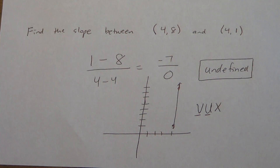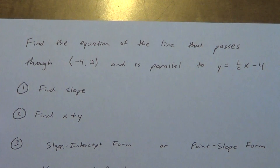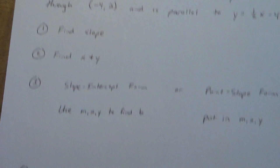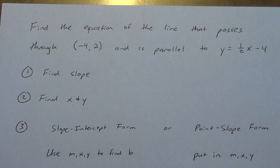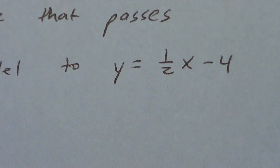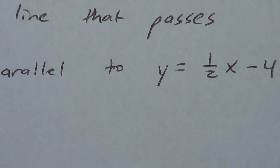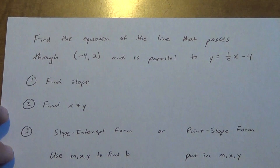You should be able to find slope if I give you two points. The next thing you need to be able to do is work with equations of lines. Here's our example: find the equation of the line that passes through the point (-4, 2) and is parallel to y equals one half x minus 4.